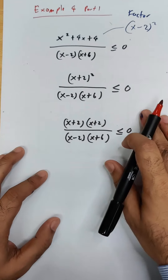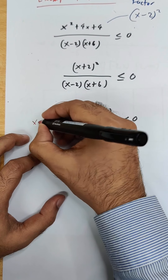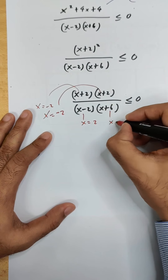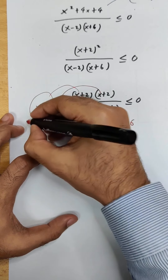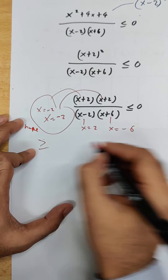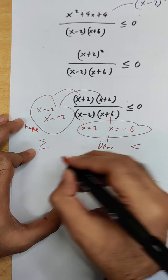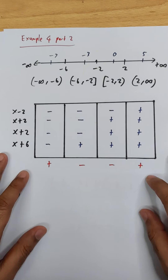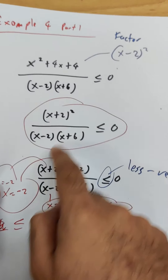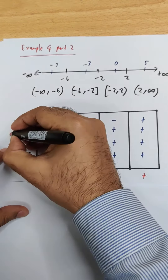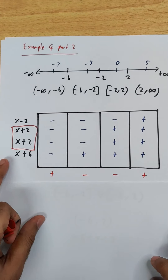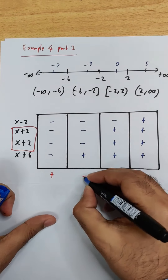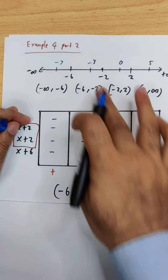The critical values are: x equals negative 2 (twice, since it's squared), x equals 2, and x equals negative 6. The numerator allows equality (closed brackets for negative 2 and 2), while the denominator does not (open bracket for negative 6). Since x plus 2 appears twice, there are four factors in the table, not three.